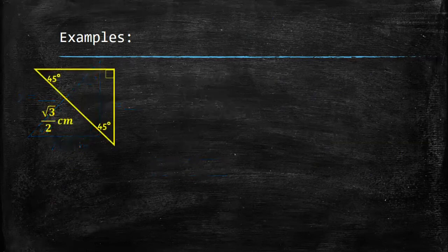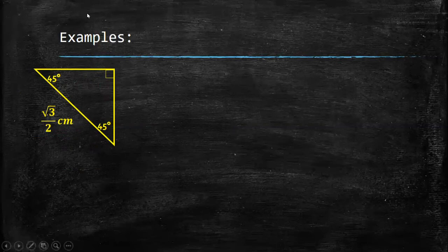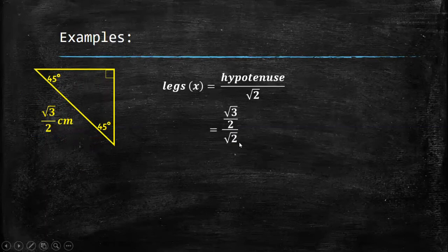Example 4: The given is the hypotenuse of √3 over 2 centimeters, and we need to find the measure of the legs. Using the formula hypotenuse over square root of 2, we substitute: square root of 3 over 2, divided by square root of 2. Because this is a complex fraction, we need to simplify it by multiplying by the reciprocal of square root of 2, which is 1 over square root of 2.